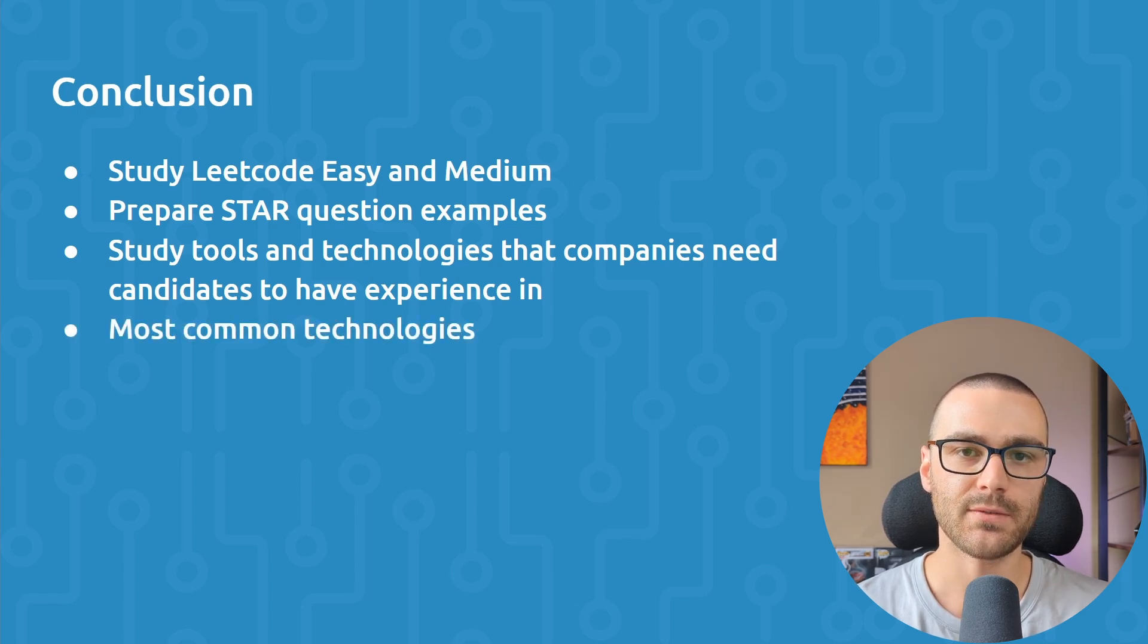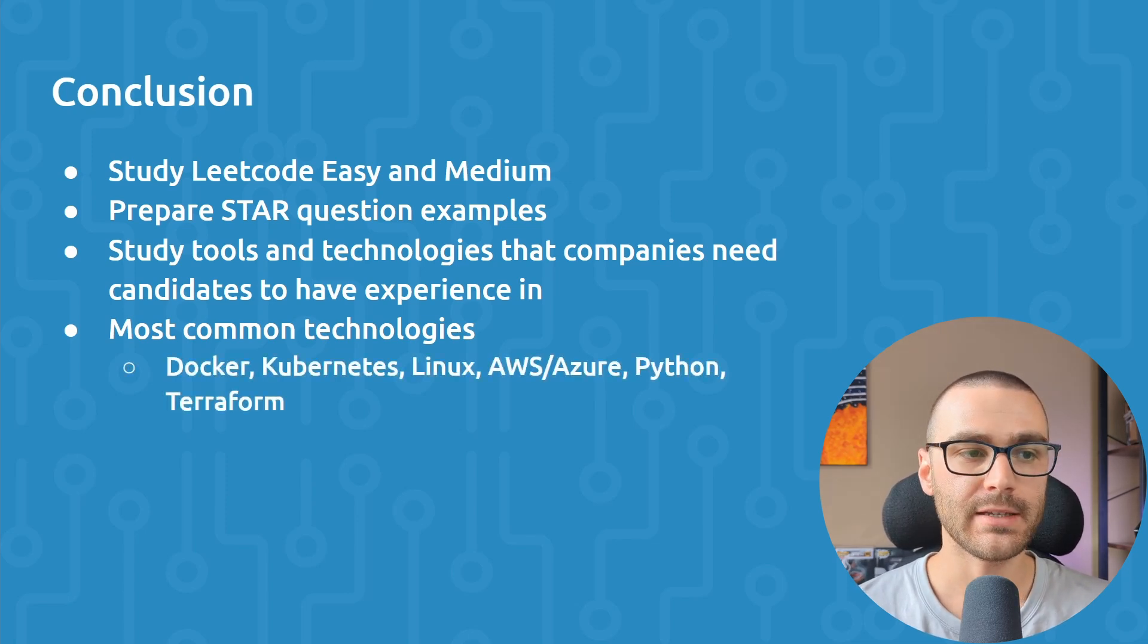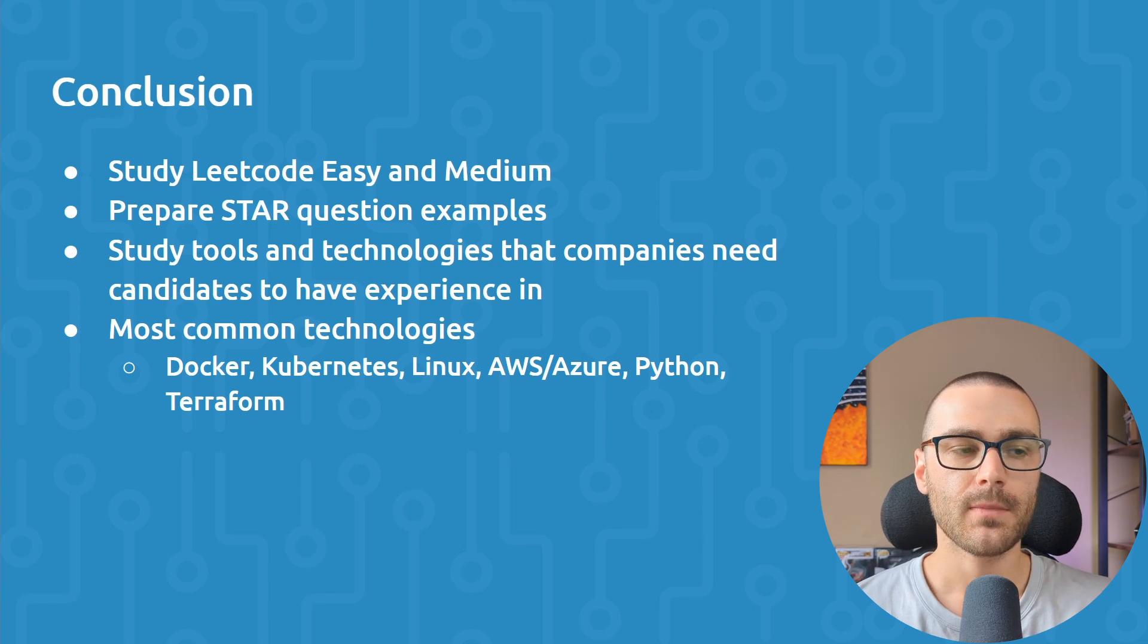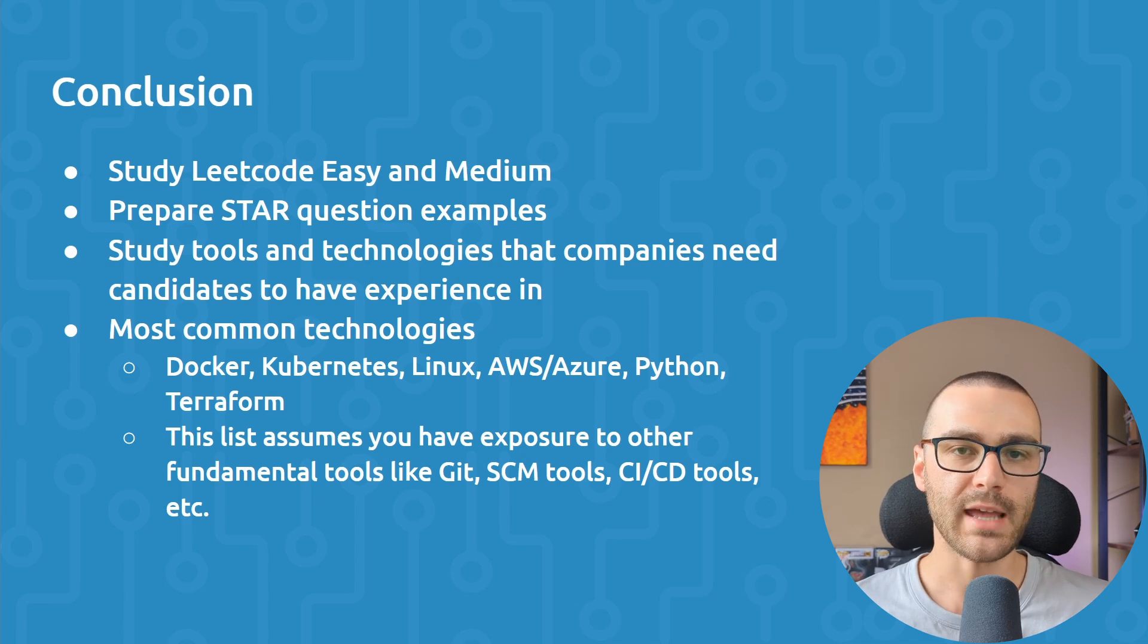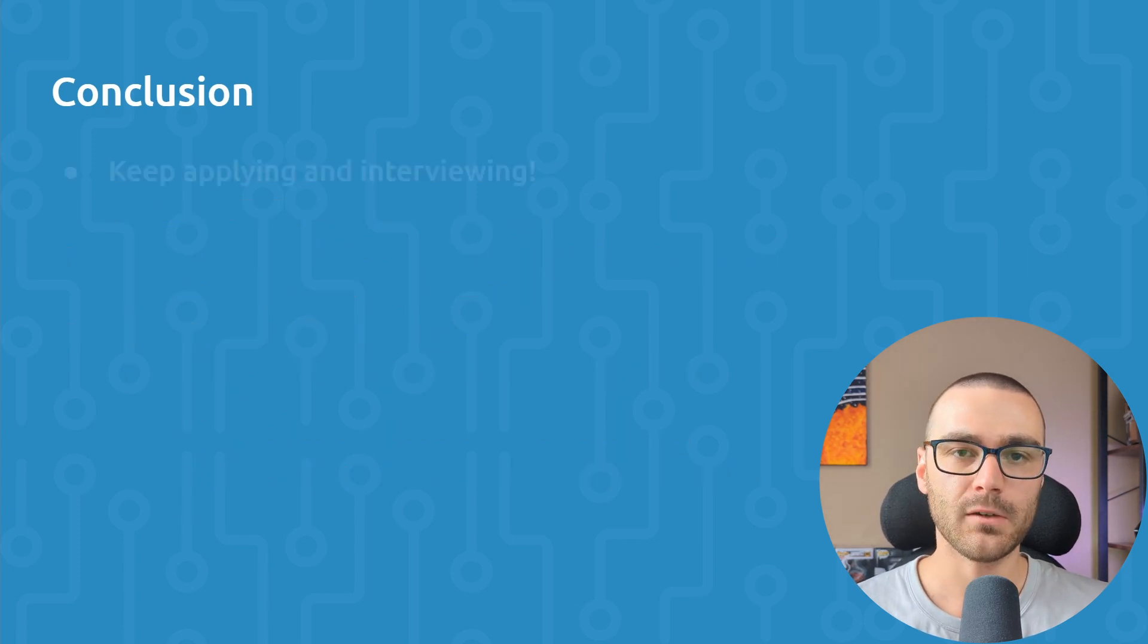In general, the most common technologies that I've seen in job descriptions and have been asked about in interviews are Docker, Kubernetes, Linux, AWS, Azure, Python, and Terraform. Those seem to be trending quite a bit right now in DevOps interviews. And I'd also like to note that that list assumes that you already have exposure to the long list of other DevOps tools that you're kind of expected to have experience with, like Git, SCM tools like GitHub, GitLab, or Bitbucket, and CI/CD tools like Jenkins or Travis CI.